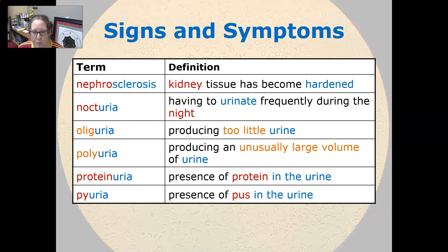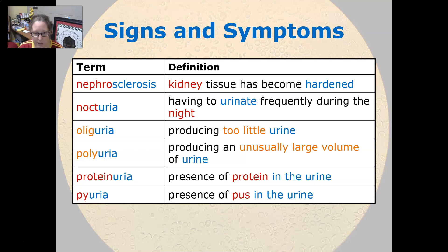Oliguria is producing too little urine. Polyuria is producing an unusually large volume of urine. Proteinuria is the presence of protein in the urine, and pyuria is the presence of pus or white cells in the urine.